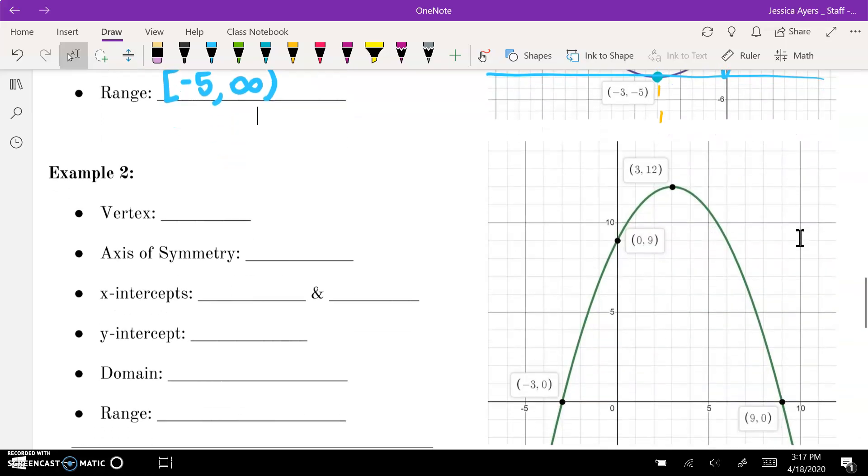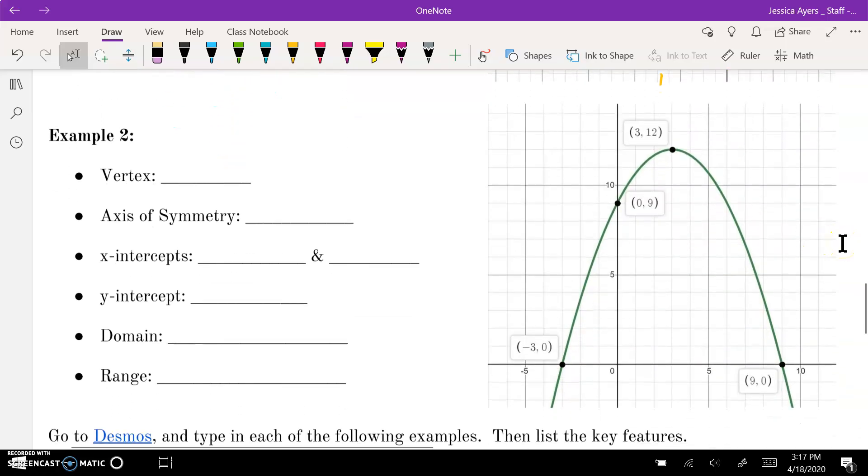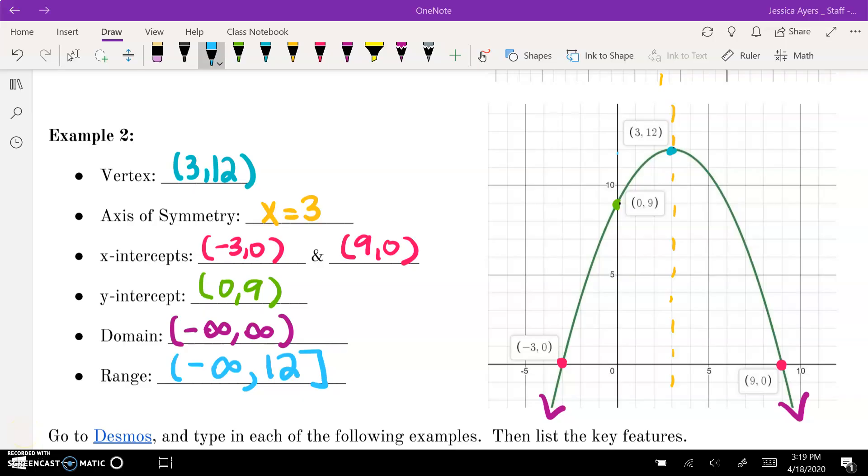Now you take a second and you do this example. Take a second and check your answers. You can see that the vertex is 3, 12. The axis of symmetry happens at x equals 3. We have two x-intercepts, one at negative 3, 0, and one at 9, 0. A y-intercept at 0, 9. And then a domain of all real numbers from negative infinity to infinity.